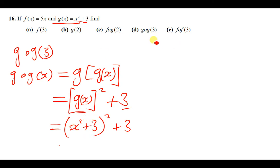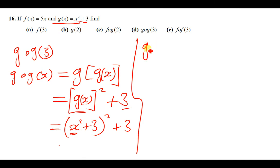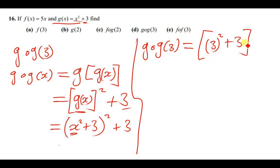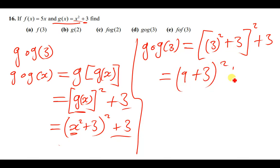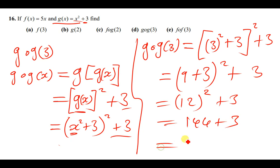Now we replace x with 3 to find g(g(3)): (3² + 3)² + 3 = (9 + 3)² + 3 = 12² + 3 = 144 + 3 = 147.